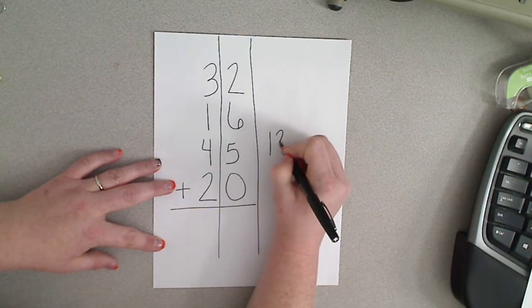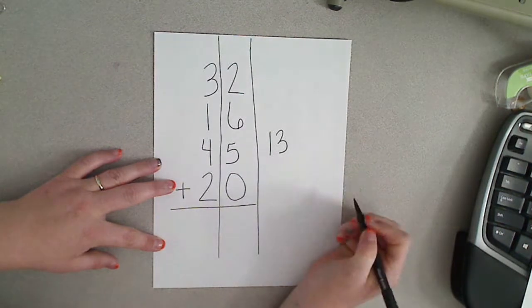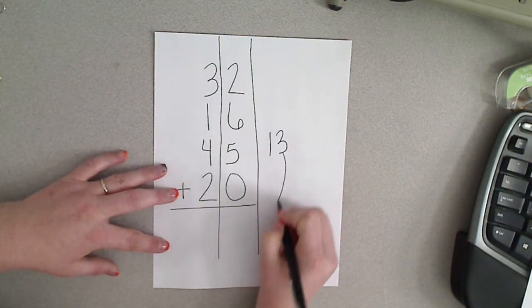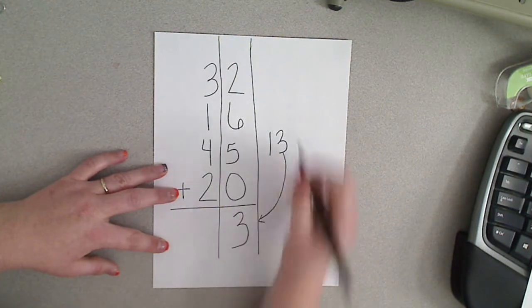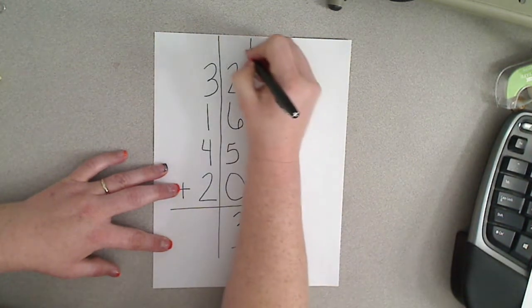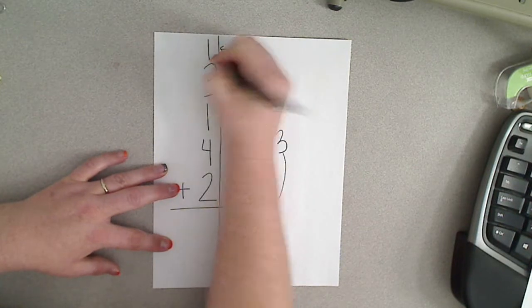So they need to write 13 out to the side, and then they're going to show that they leave the ones in the ones place and they regroup by carrying the tens next door.